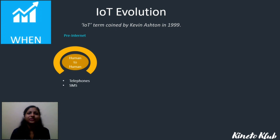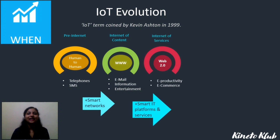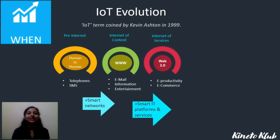Humans interacted with each other via telephones and SMS, known as the pre-internet era. With the advent of smart networks, we had email for exchange of information, and the internet also acted as a source of entertainment — the internet of content era. Next, with the advent of smart IT platforms and services, we had Web 2.0 with e-commerce websites such as Amazon and Flipkart, known as the internet of services era.